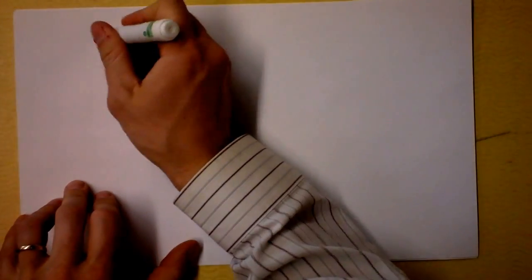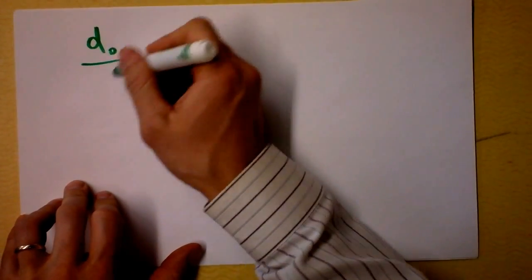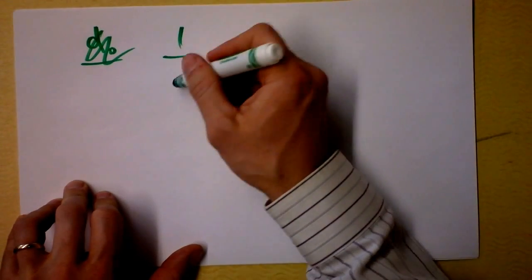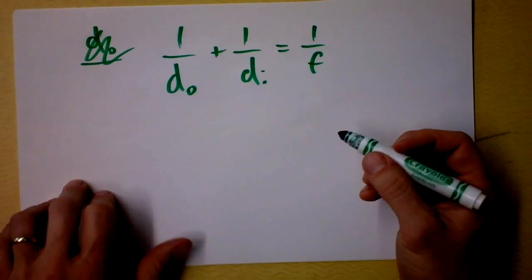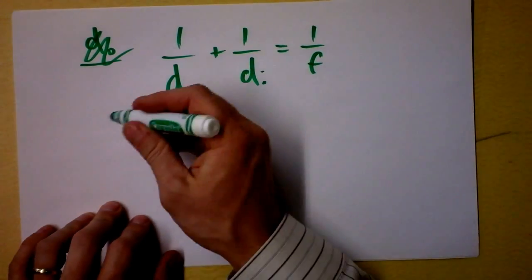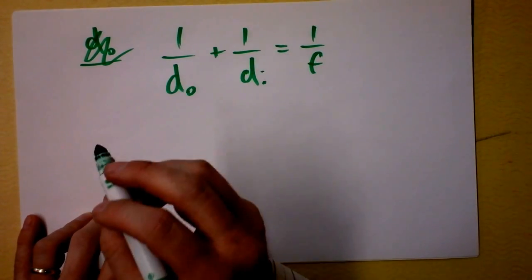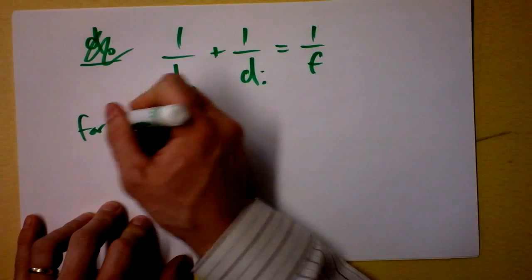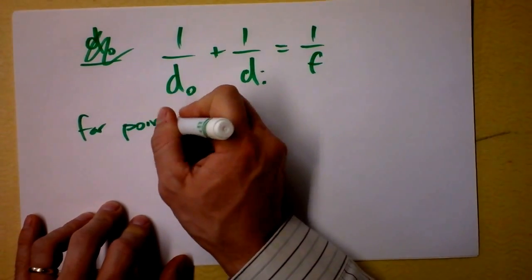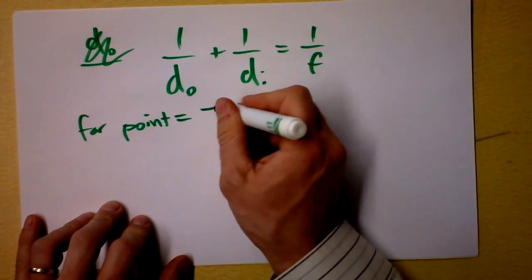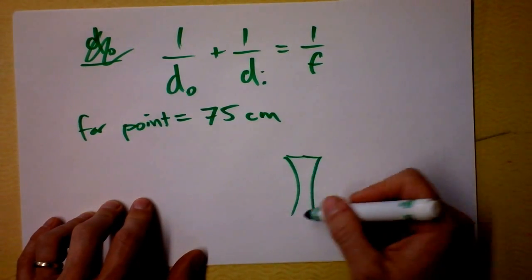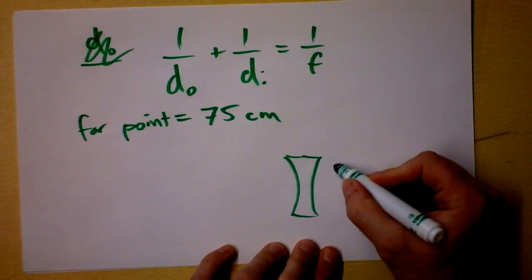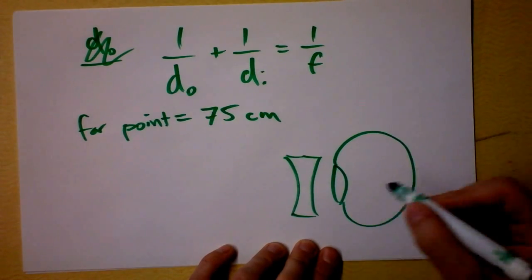What about, though, let's do the same problem. Let's write that equation out again: 1 over the distance of the object plus 1 over the distance of the image is 1 over the focal length. And what if I've got a, I actually do have a student right now, and this student has a far point that is so close. His far point is 75 centimeters.